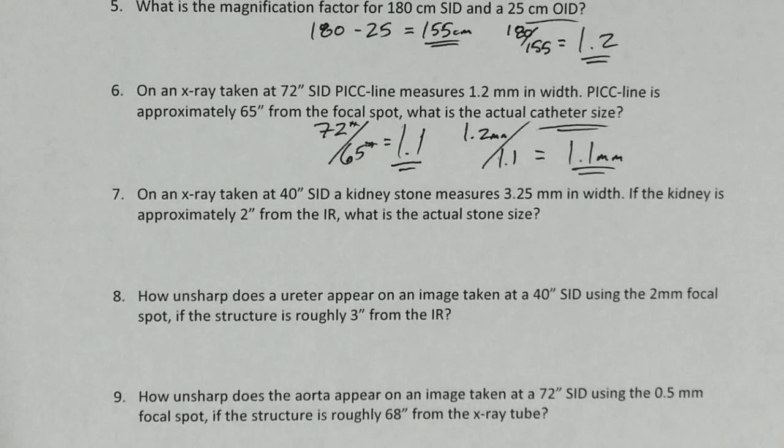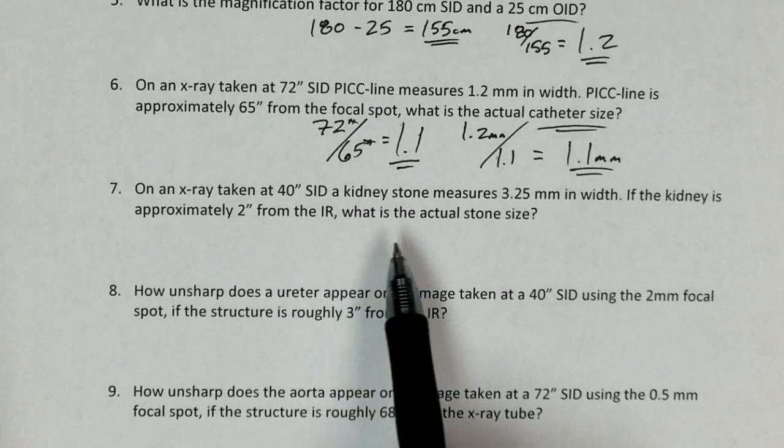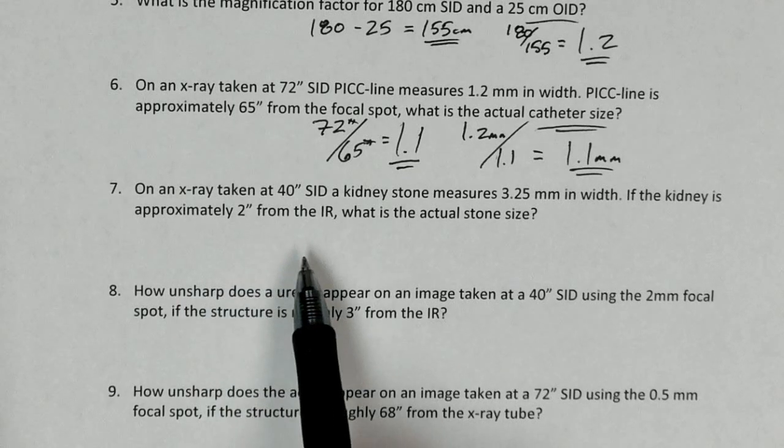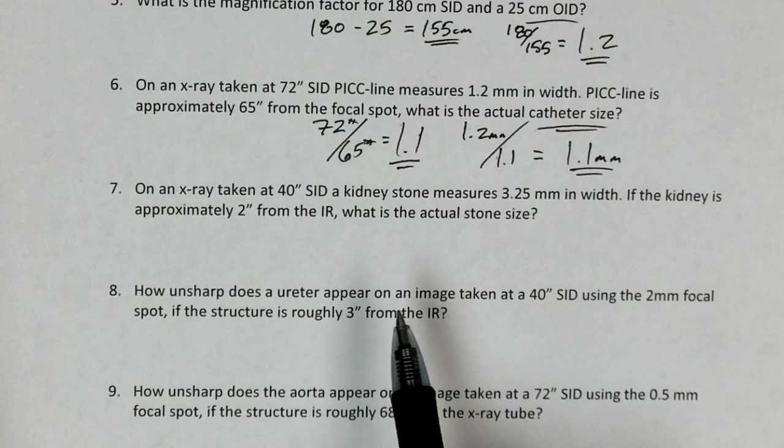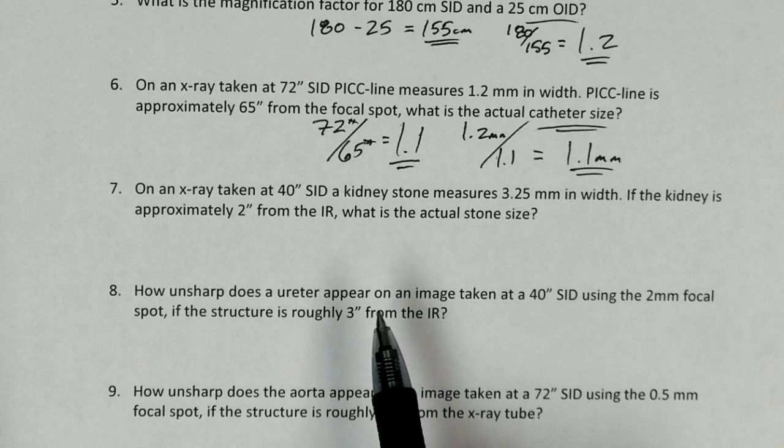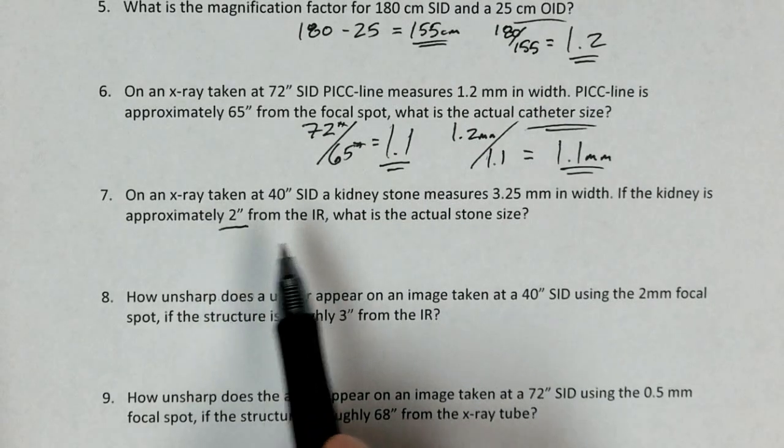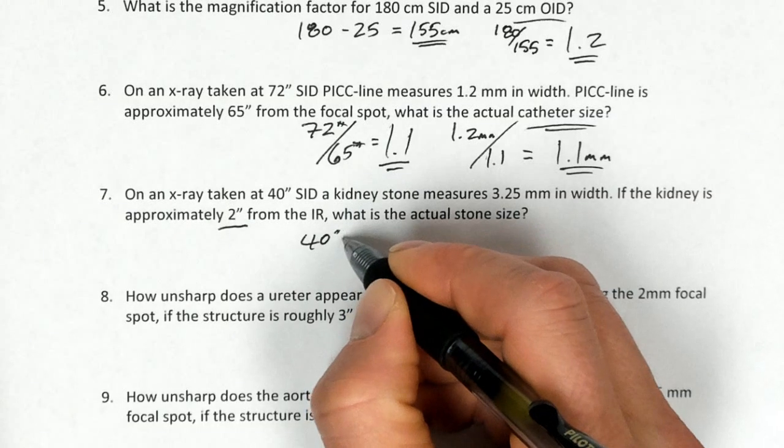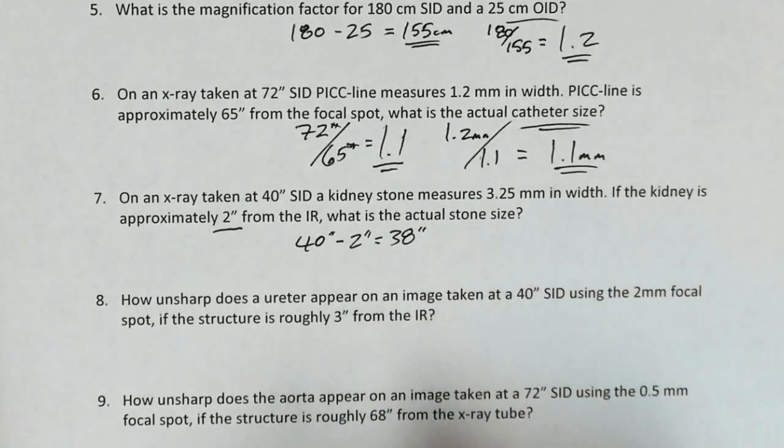The next problem says, on an x-ray taken at a 40-inch SID, a kidney stone measures 3.25 millimeters in width. If the kidney is approximately 2 inches from the image receptor, what is the actual stone size? So asking us the exact same problem with some slightly different parameters. So first thing we're going to want to do in working this problem is now solve for what the actual SOD is. So they've given us an OID. They've actually buried it in here. They've said it's approximately 2 inches from the image receptor. So that's the OID. So we'll take the SID of 40 inches. We're going to subtract out that object to image distance, and that will give us 38 inches is our SOD.